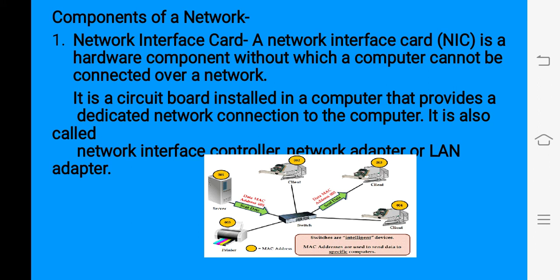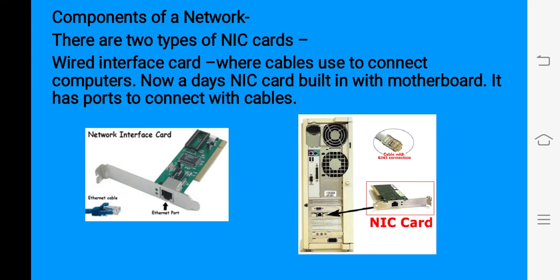Now we discuss some components of a network. First: network interface card (NIC). A network interface card is a hardware component that allows a computer to connect with the network. Without it, a computer cannot connect with the network or share data and files with other computers. It is a circuit board installed in a computer that provides the connection, and it is also known as a network interface controller, network adapter, or LAN adapter. Every computer connected to the network has a network interface card.